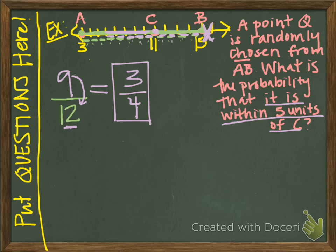Those are your notes. My suggestion with probability problems: if you want to get it right, always start with the denominator — figure out how many things could happen. Then, of those possibilities, don't add anything extra; figure out your numerator — of those things that could happen, how many do we want to happen? And that's it. See you in class.